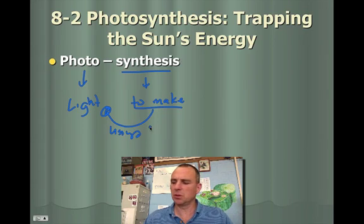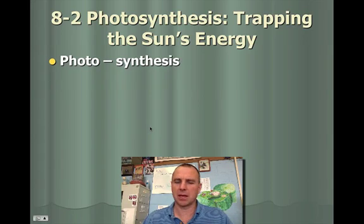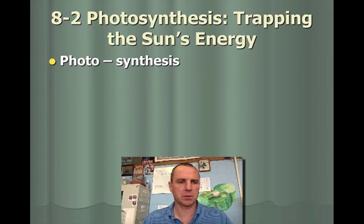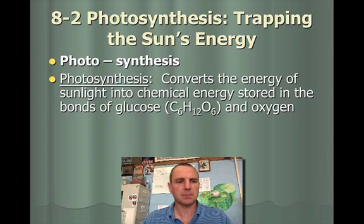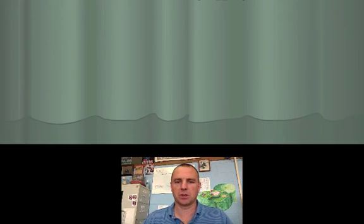Basically, we're going to use sunlight to create a sugar called glucose. Here's the formal definition: photosynthesis converts the energy of sunlight into chemical energy stored in the bonds of glucose, which is C6H12O6, and oxygen.